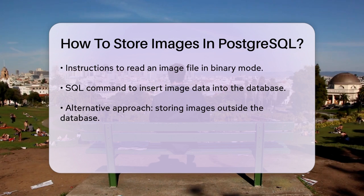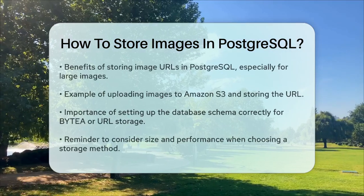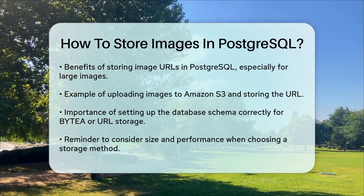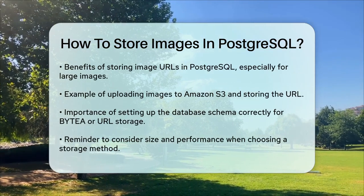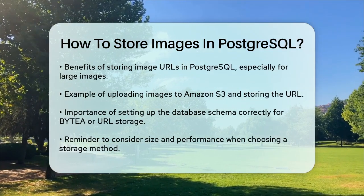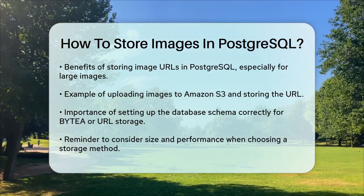Example of storing the S3 URL in PostgreSQL: const url equals https://s3.amazonaws.com/your-bucket/your-image.jpg. Const query, insert into images, URL, values, $1. Await db.query(query, url).